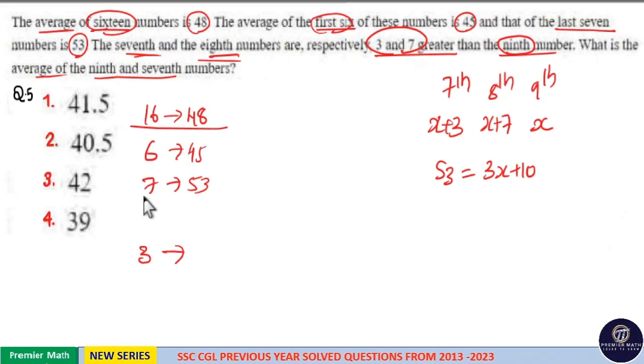From this data, that is average of 16 numbers and 13 numbers, we can find the average of 3 numbers. But instead of average, find the sum of these 3 numbers.